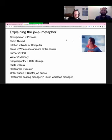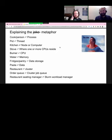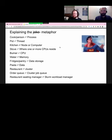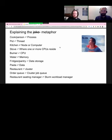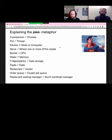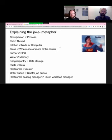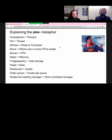Thomas, do you want to explain the analogy? Essentially, in this metaphor you have your cook, which is the processor — the process that does the computation. You have your pot, which you can think of as one thread on your processor. In one pot you can boil a certain amount of pasta. You have your kitchen, which is your computer, which could have multiple pots and plates. You have your stove, where you have one or more CPUs that can process information. Your burner on the stove is one processor — one CPU — and there could be many in one node or one computer.